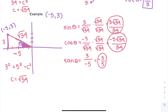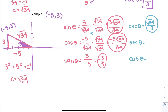For the remaining three trig functions: cosecant of theta — flip sine, keeping square root in numerator — gives square root of 34 over 3. Secant of theta — flip cosine — gives square root of 34 over negative 5. Cotangent of theta — flip tangent — gives negative 5 over 3. Notice that because our point was in the second quadrant, it made cosine, tangent, secant, and cotangent negative. That's why you must pay attention to where the point is and label values as negative accordingly.